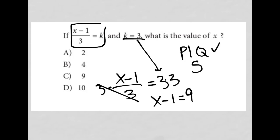To get x by itself, I'm going to add 1 to both sides, which would result in x = 10. x = 10 is answer choice D, so that is our final answer.